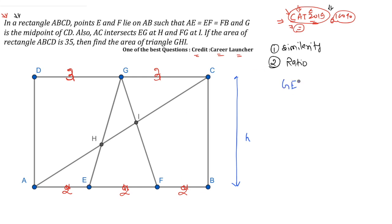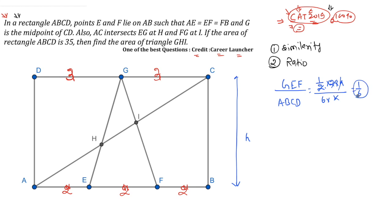The area of triangle GEF out of rectangle ABCD: area of GEF equals half times base times height, and area of ABCD equals base times height. The base and height cancel out, so the ratio is 1/6. Therefore, the area of GEF is one-sixth of the area of ABCD.